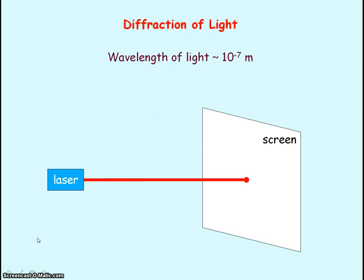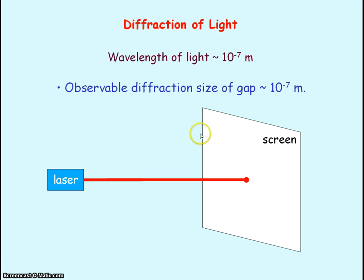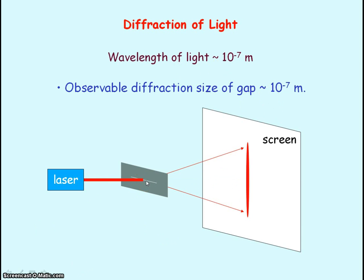In order to diffract light we would need to pass it through a gap whose size is approximately equal to the wavelength of light — so a gap of approximately 10 to the minus seven meters. Here we have red laser light shining on a screen. If we place a slit in front of the laser light and the width of the slit is approximately equal to the wavelength of light, then the laser light will pass through the slit and spread out — that is, it will diffract.